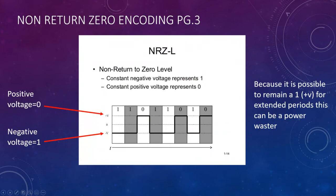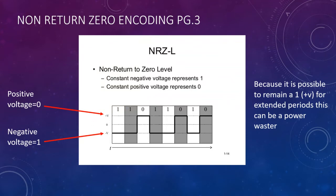On the non-return-to-zero encoding slide, a constant negative voltage represents a one and a constant positive voltage represents a zero. The issue with NRZ encoding is that because it's possible for a zero or a one to be continuous for extended periods, it can waste power — it's always at a voltage, requiring a current draw regardless. So that's a downfall of non-return-to-zero.